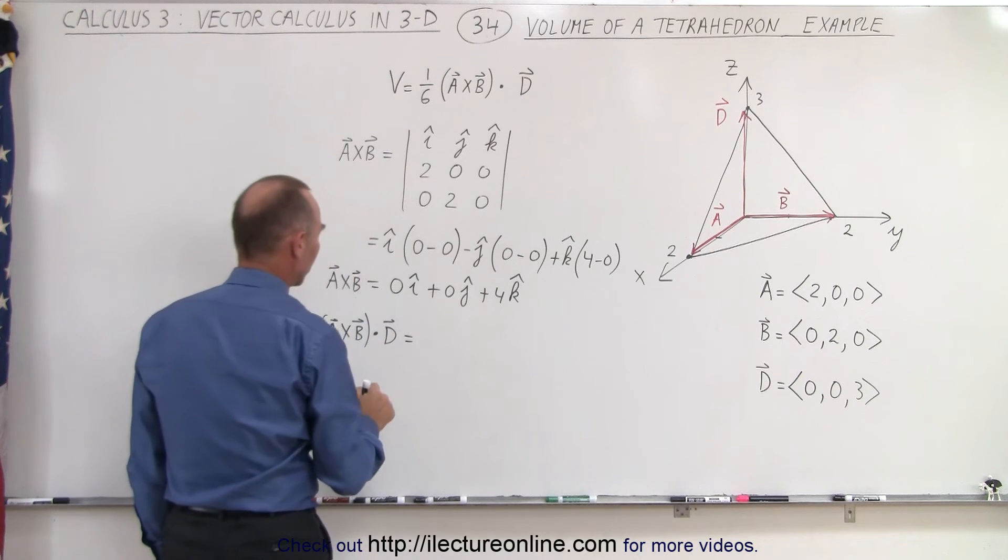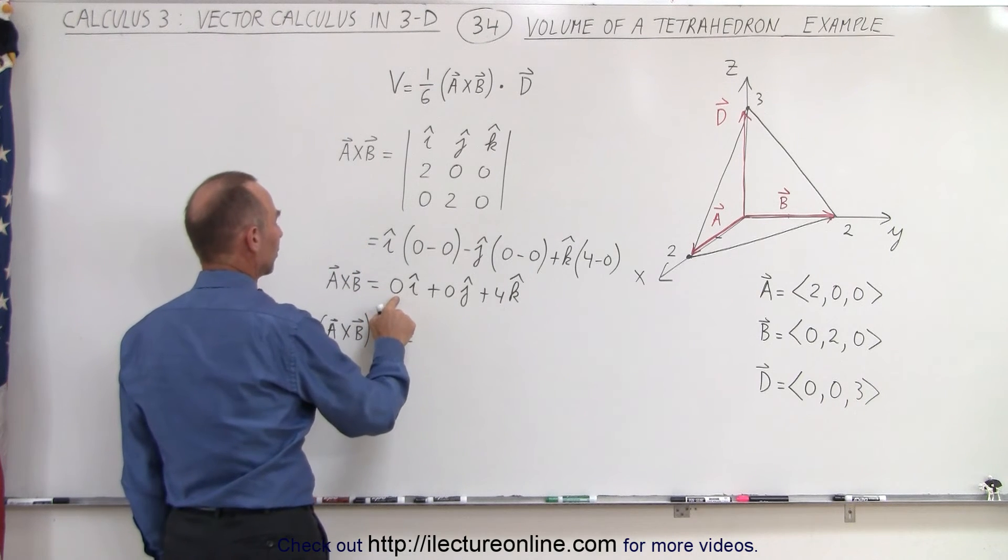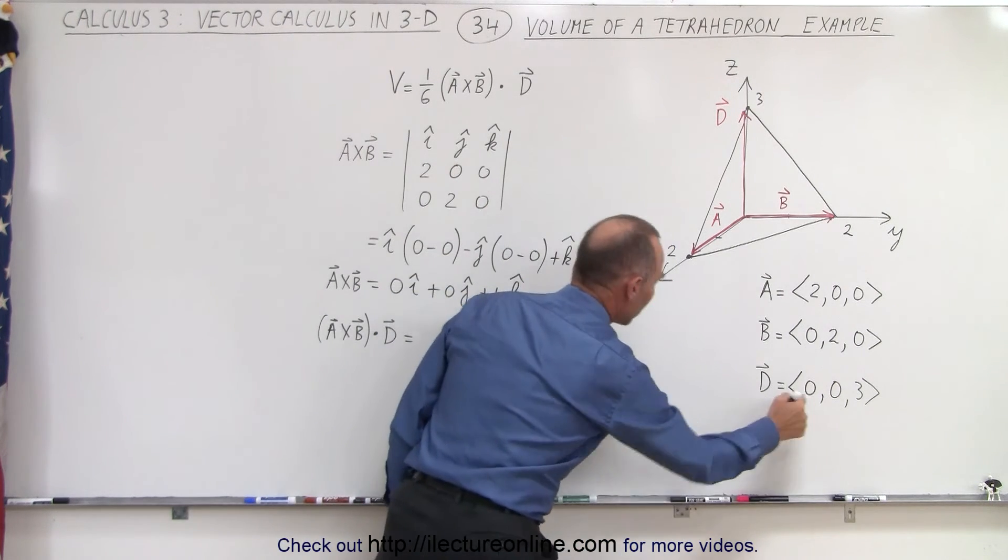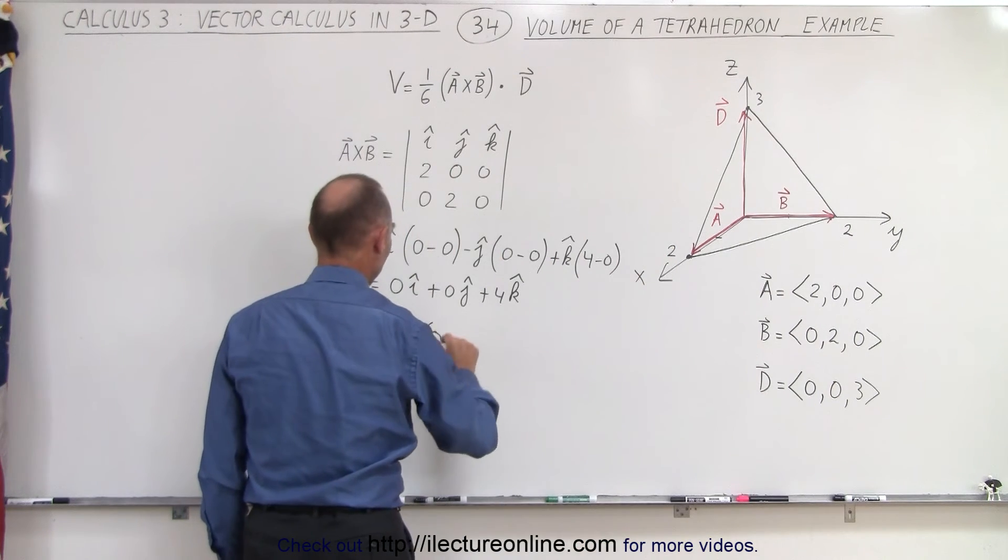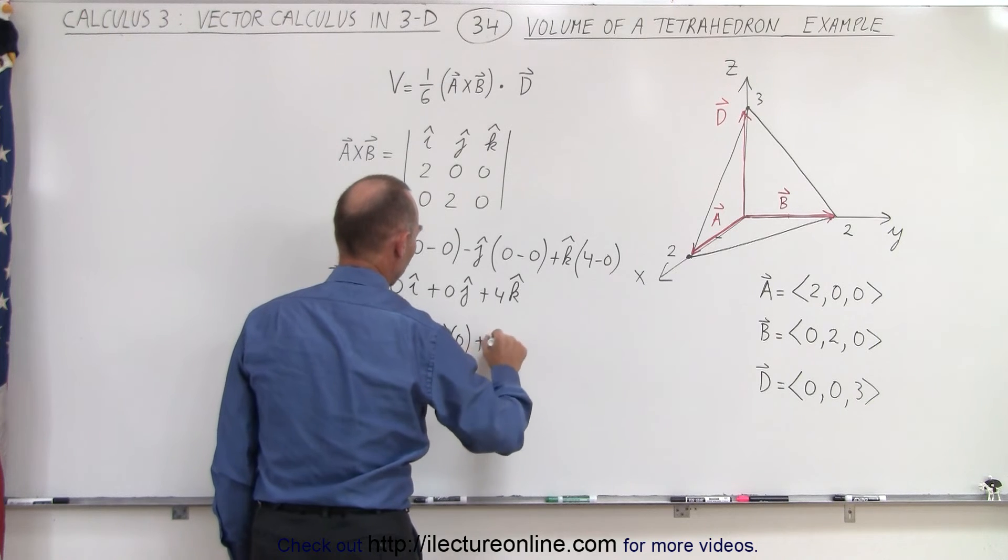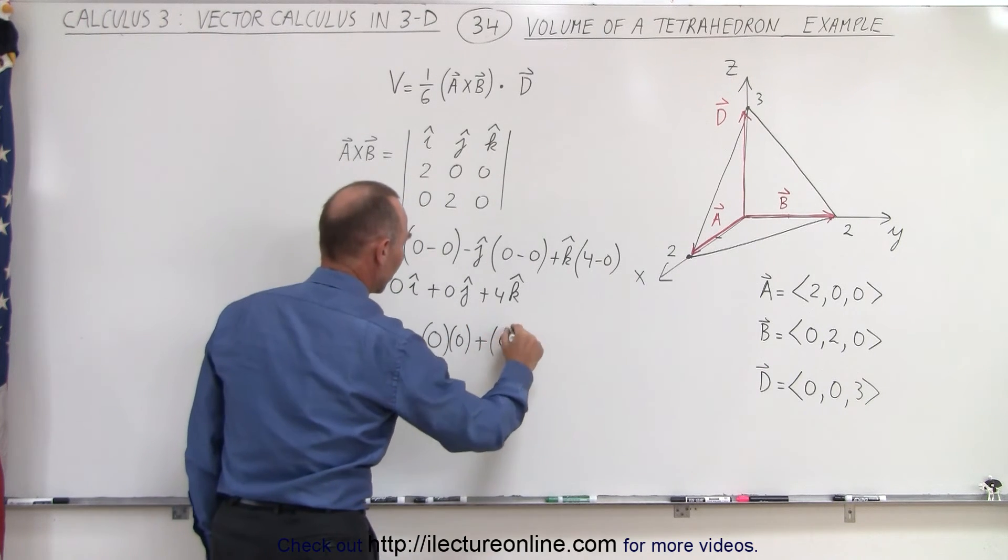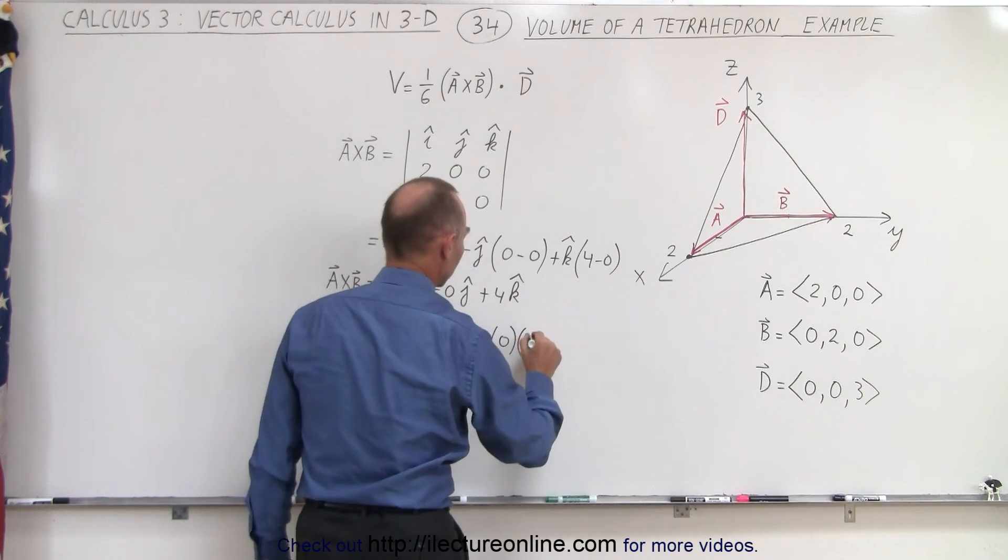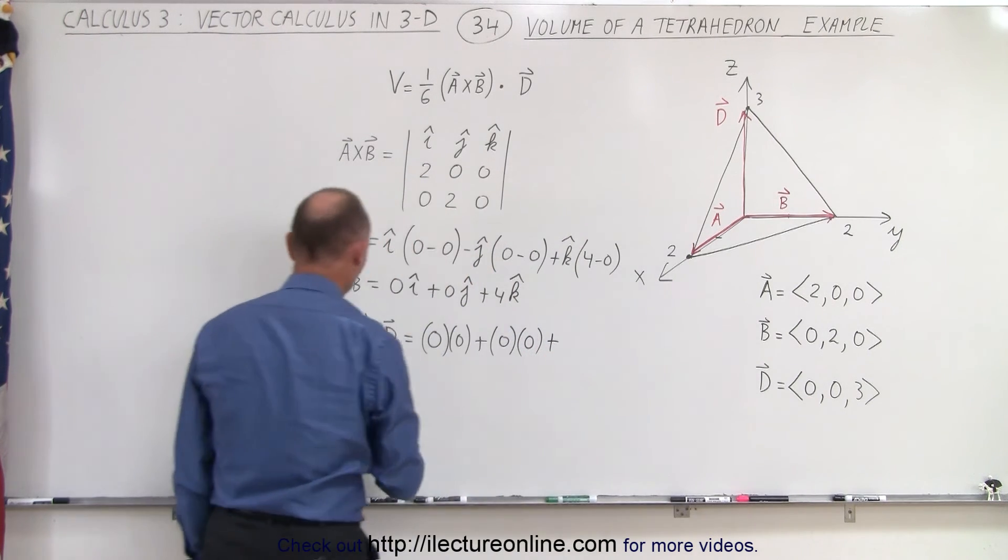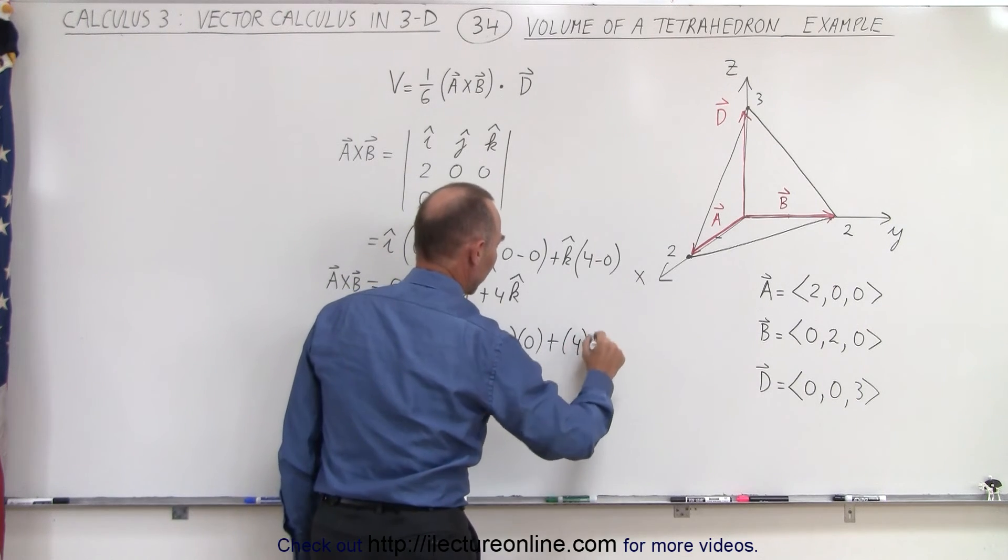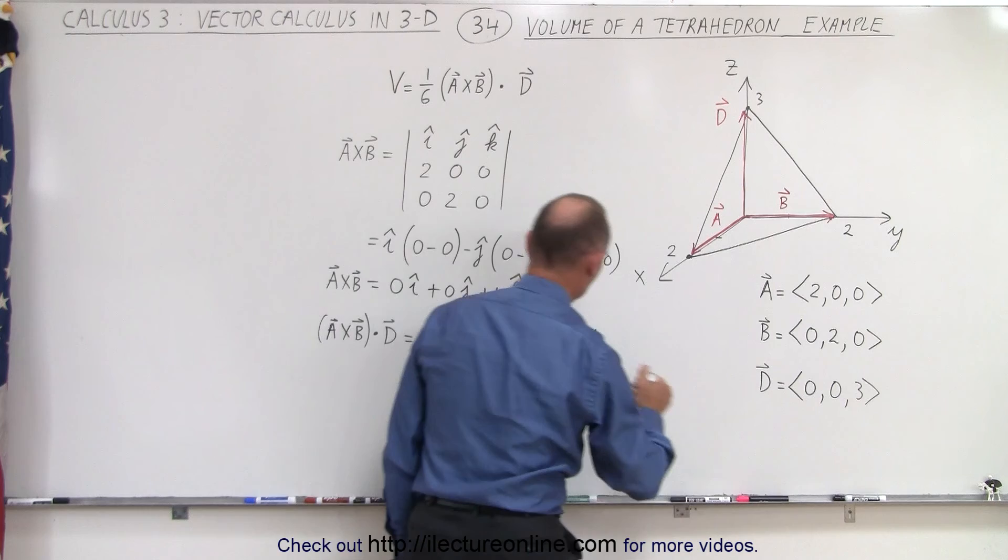This equals the first component of A cross B multiplied times the first component of D. So that gives us 0 times 0 plus the second component of A cross B, which is 0, times the second component of D, which is 0, plus the third component of A cross B, which is 4, times the third component of D, which is 3. So this equals 12.